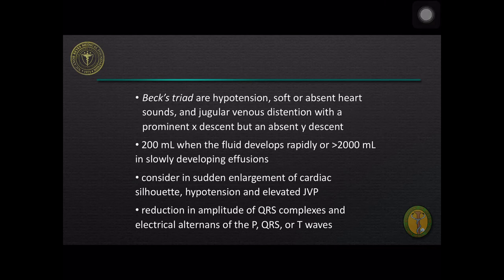The three principal features of cardiac tamponade, also known as Beck's triad, are hypotension, soft or absent heart sounds, and jugular venous distension. The amount of fluid necessary to produce cardiac tamponade may be as small as 200 ml when the fluid develops rapidly, or more than 2 liters in slowly developing effusions.